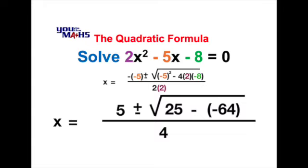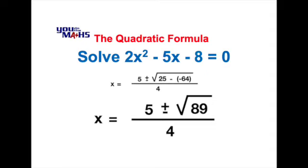The only simplification required in the next step is inside the square root. It's 25 minus -64, which is basically like performing an addition, so 25 + 64 = 89.